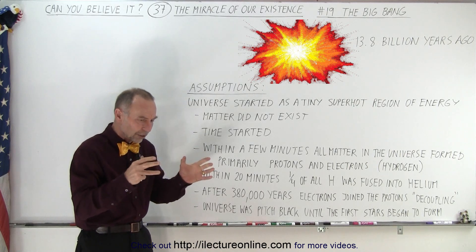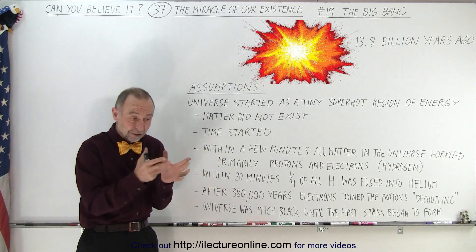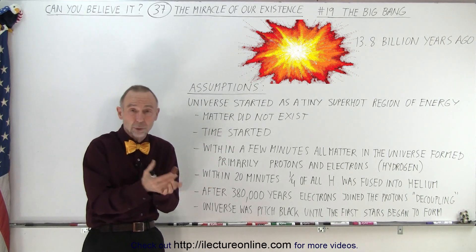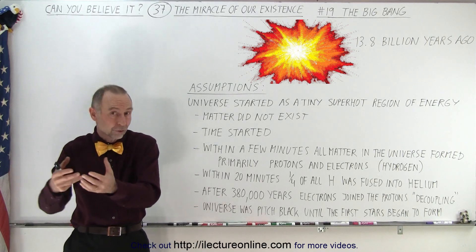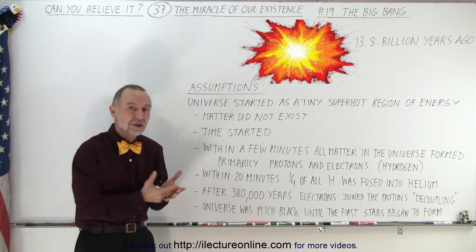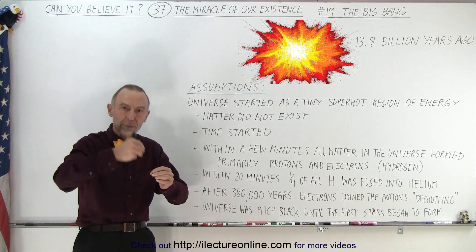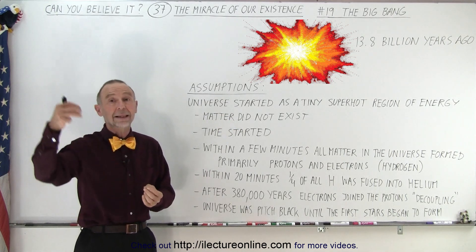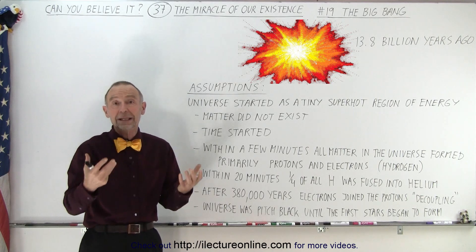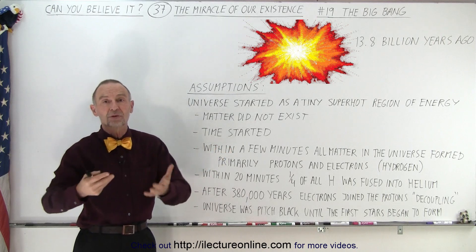So the universe started with just energy, then it became protons, electrons, then in about 20 minutes from the very start of the universe a quarter of that hydrogen turned into helium or the quarter of the protons turned into alpha particles or the nuclei of helium. Then eventually after 380,000 years when the universe cooled down sufficiently the electrons began to join with the protons to form hydrogen and the electrons began to join with the alpha particles to form helium. At that point a quarter of the universe was helium and three quarters was hydrogen.